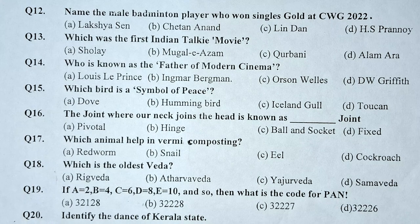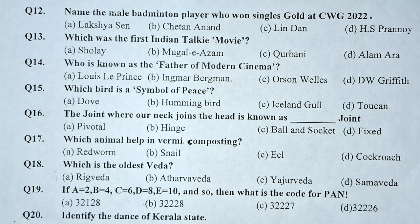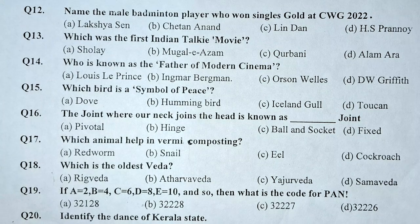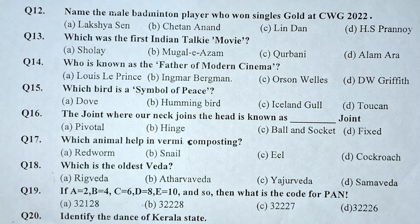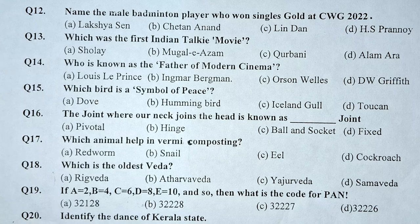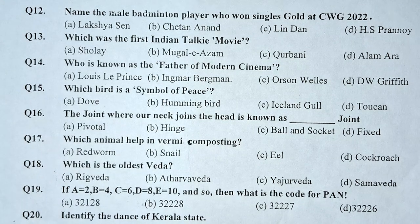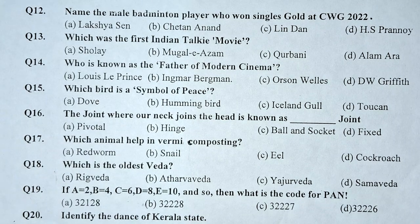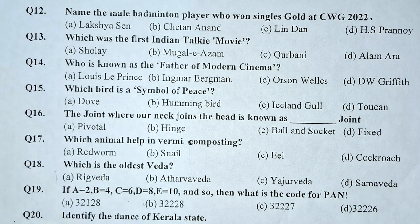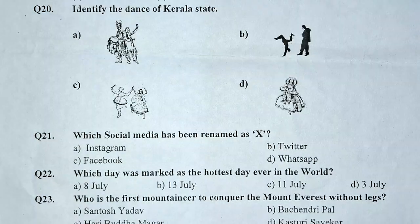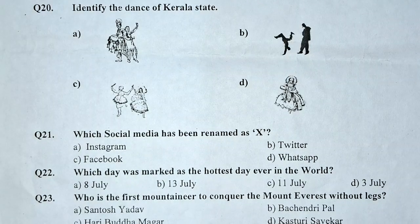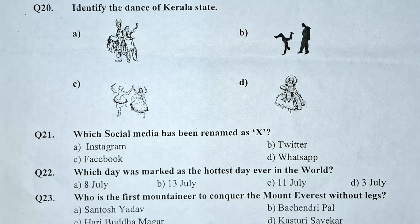Question number 19: If A is equal to 2, B is equal to 4, C is equal to 6, D is equal to 8, E is equal to 10 and so on, then what is the code for PEN? Question number 20: Identify the dance of Kerala State.